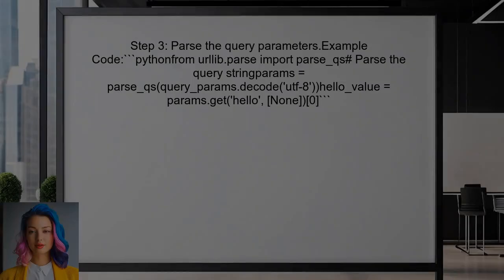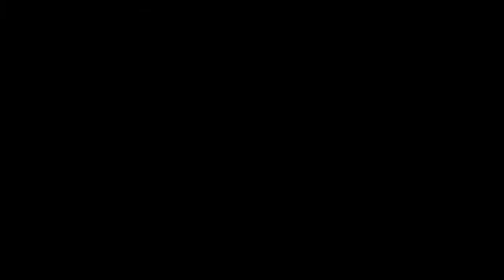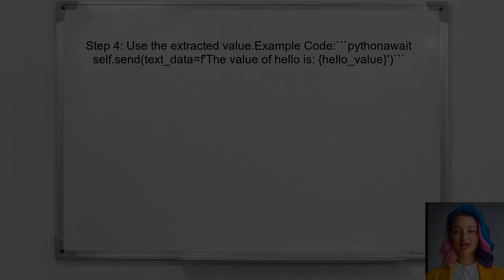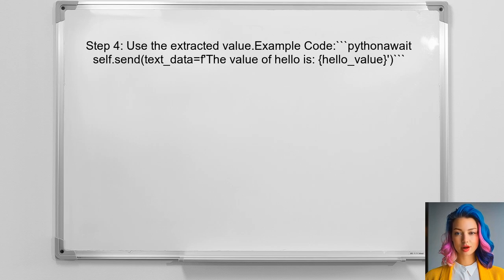After retrieving the query parameters, you should parse them to extract the values you need. This can be done using the urllib.parse module. Finally, you can use the extracted value in your application logic — for example, sending a response back to the client using the value retrieved from the query parameters.